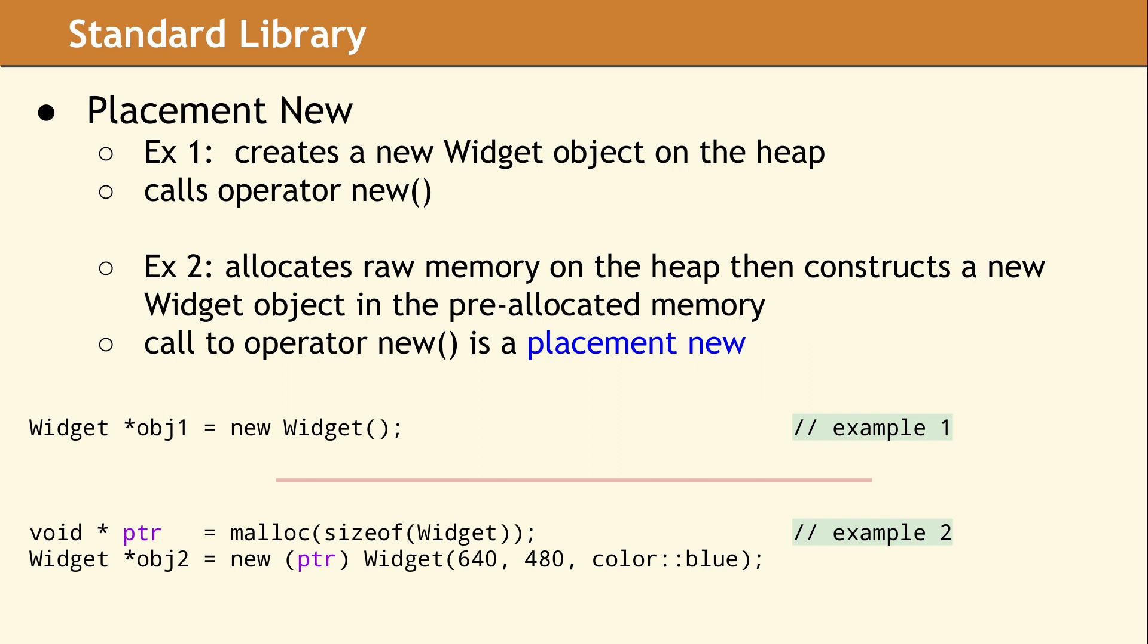The pointer variables OBJ1 and OBJ2 can be used to access the new widget objects. The pointer PTR contains the same address as OBJ2, but keep in mind, PTR is not a pointer to a widget, so it cannot be used to access any methods or data in the widget class.